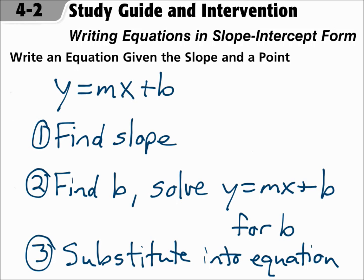Remember slope intercept form is y equals mx plus b. When you write equations in slope intercept form, first find the slope — sometimes you're given the slope, sometimes you're not. But make sure the first thing you know is the slope. Then find b. Solve y equals mx plus b for b, and then substitute b and m into the equation y equals mx plus b.